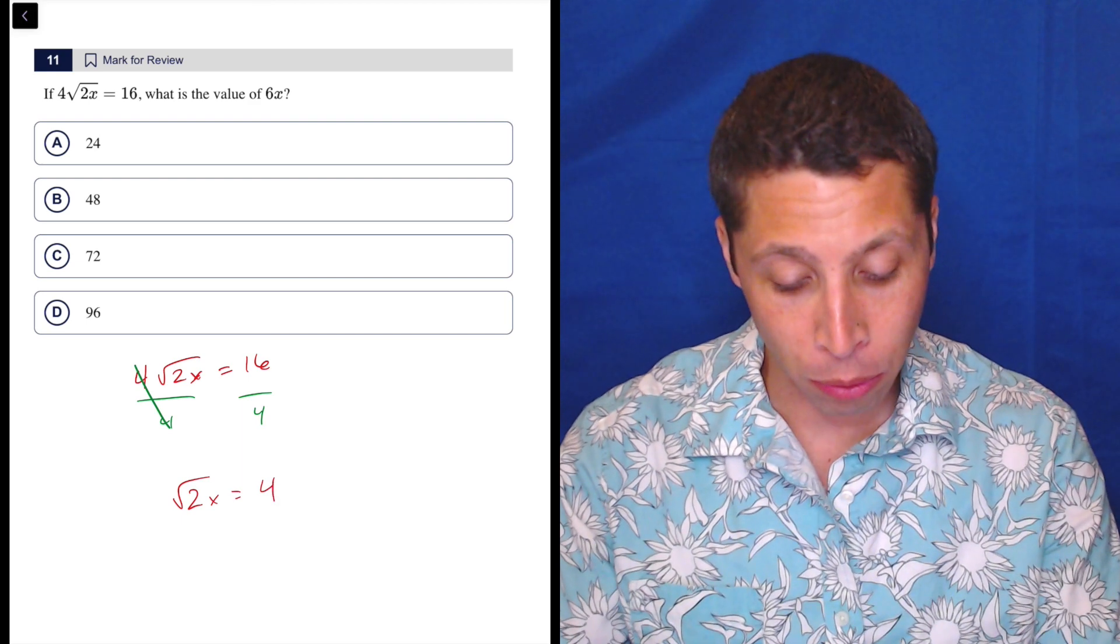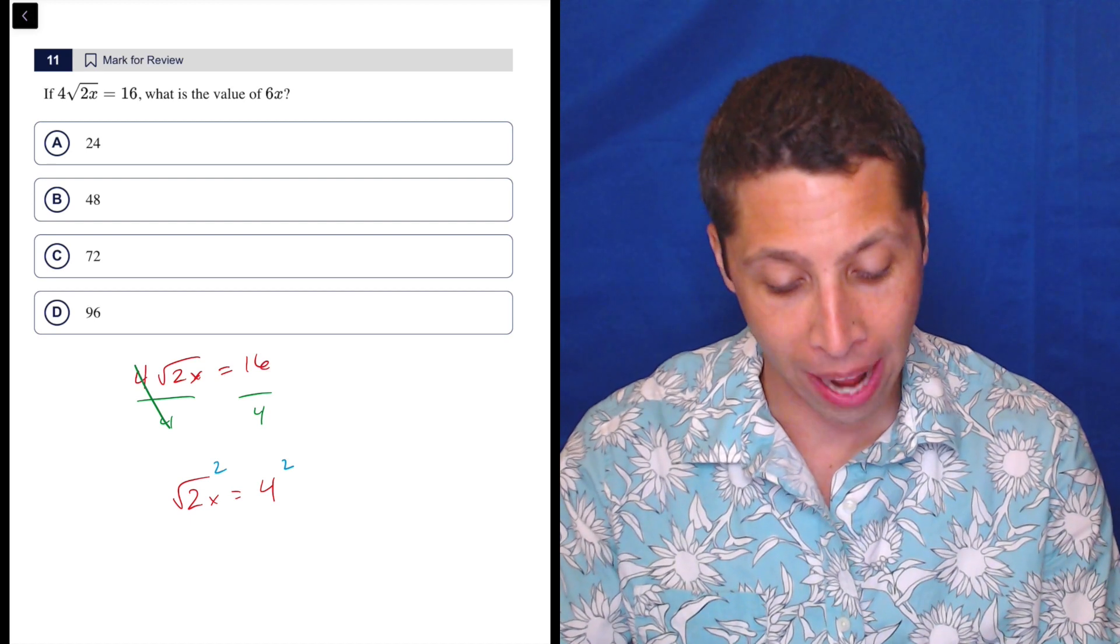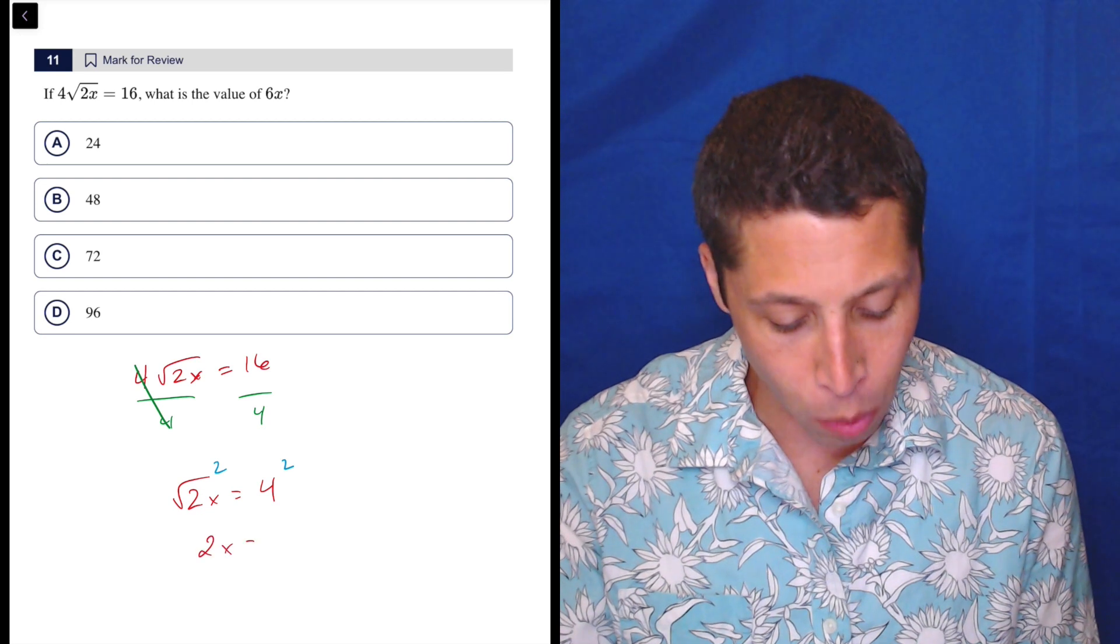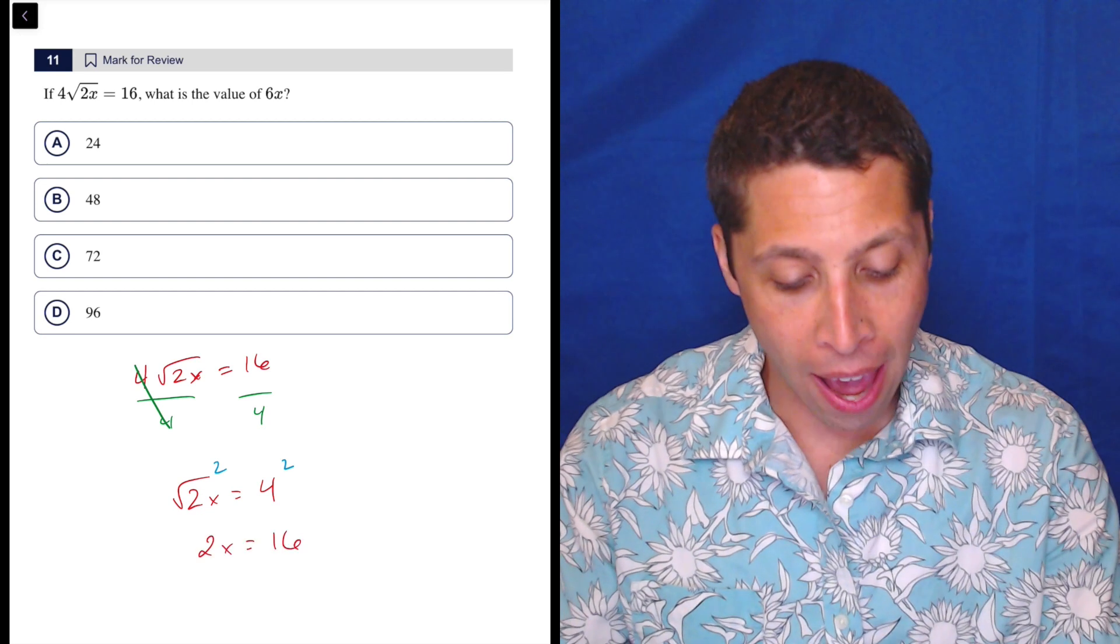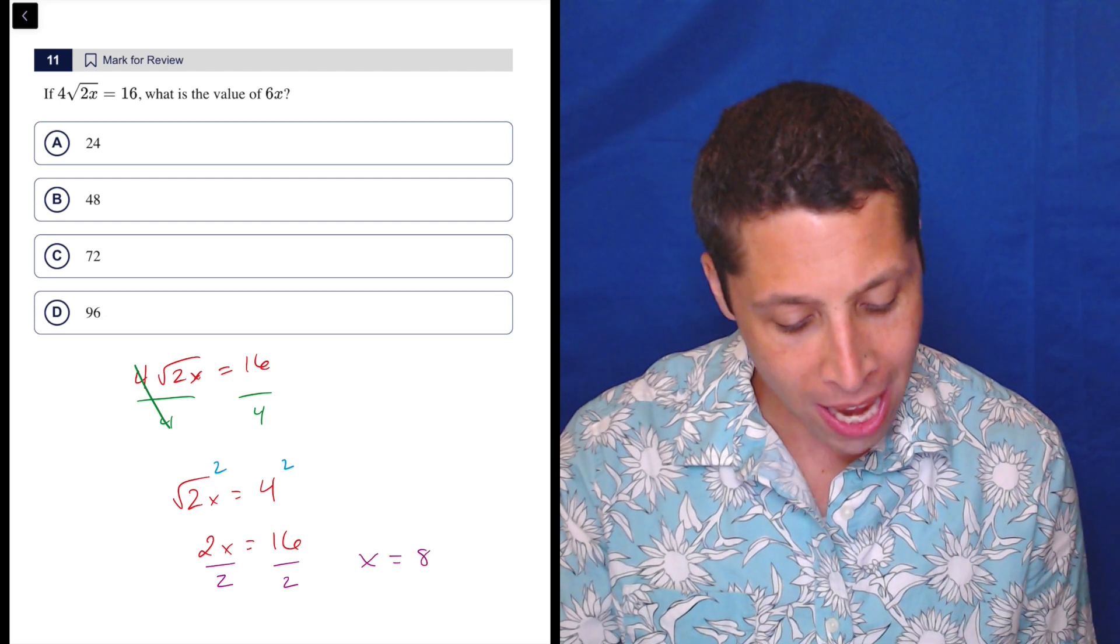Now how do you undo a square root? Well that just involves squaring something. So we can square the radical 2x, but we're going to have to square the 4 along with it to balance things out, so 2x is equal to 16, and then we've got one last step to get x alone, we divide, and we get that x is equal to 8.